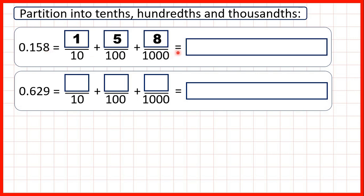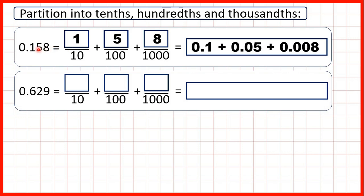We can show this partition in decimal form as well. That's 0.1 plus 0.05 plus 0.008, because the first digit after the decimal point is the tenths and we have one tenth. The second digit is the hundredths and we have five hundredths. And the third digit is the thousandths and we have eight thousandths.